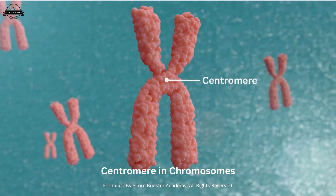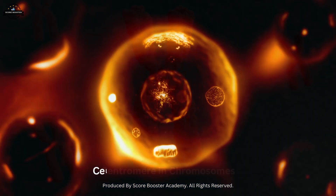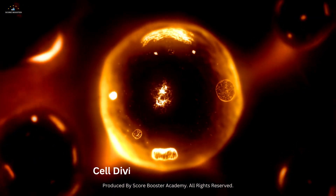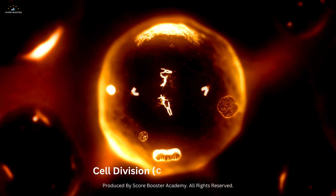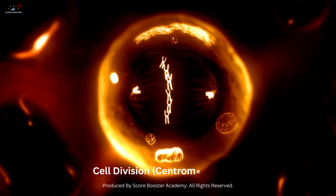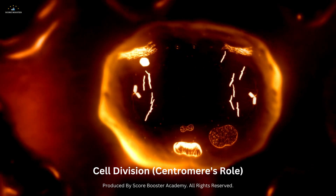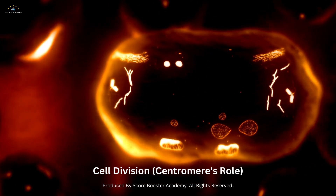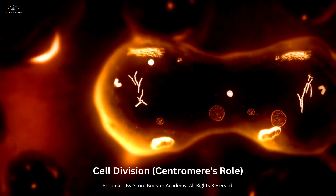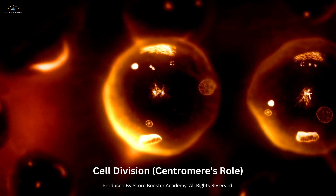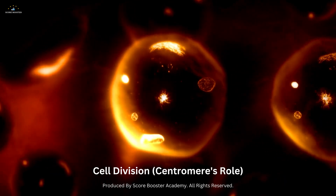The centromere, on the other hand, is a region on the chromosome that ensures proper segregation during cell division. It serves as an attachment point for the spindle fibers that help pull apart the sister chromatids during mitosis or meiosis.